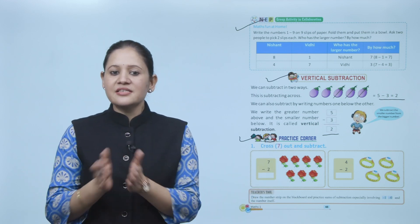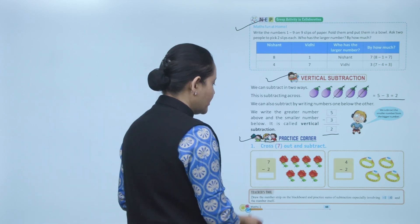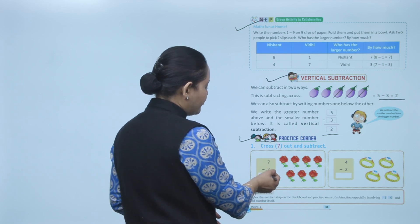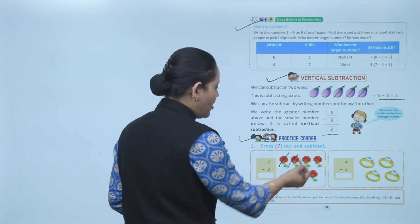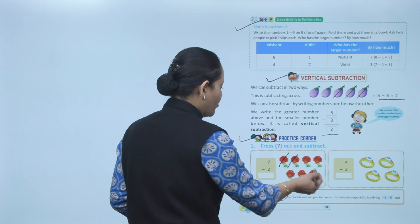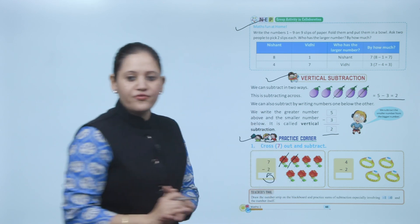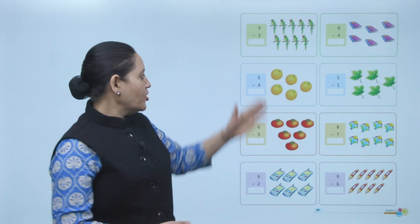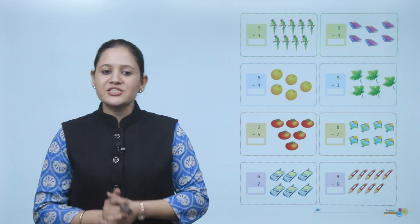Next, practice corner — cross out and subtract. Total 7 roses, cross out 2 roses: 1, 2. How many are left? 1, 2, 3, 4, 5. So 7 minus 2 equals 5. Practice all these questions and we'll move to the next topic.